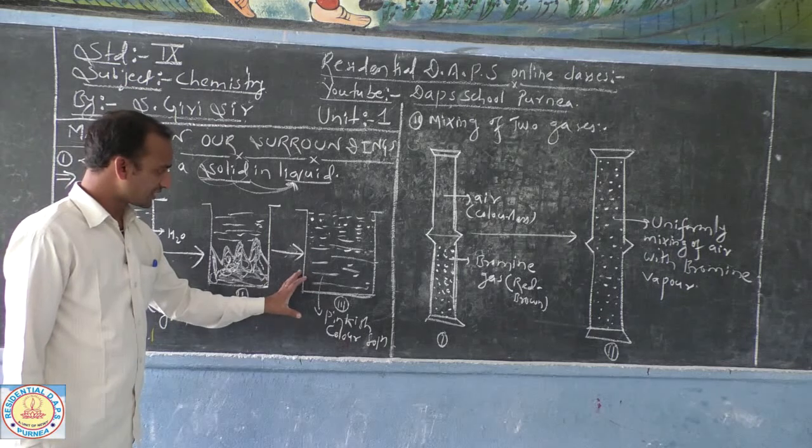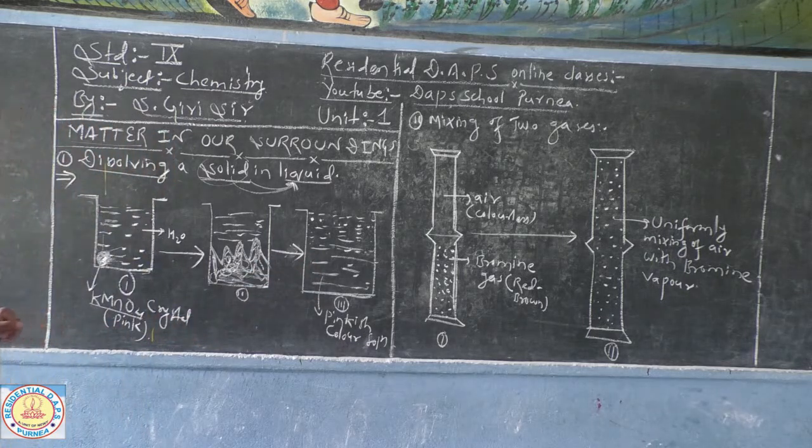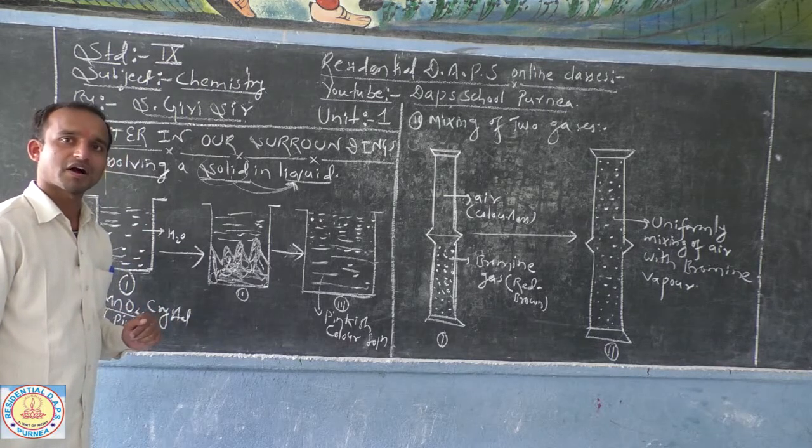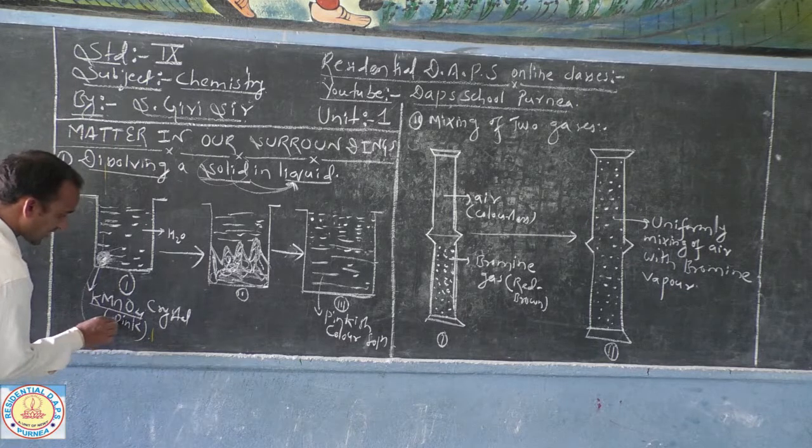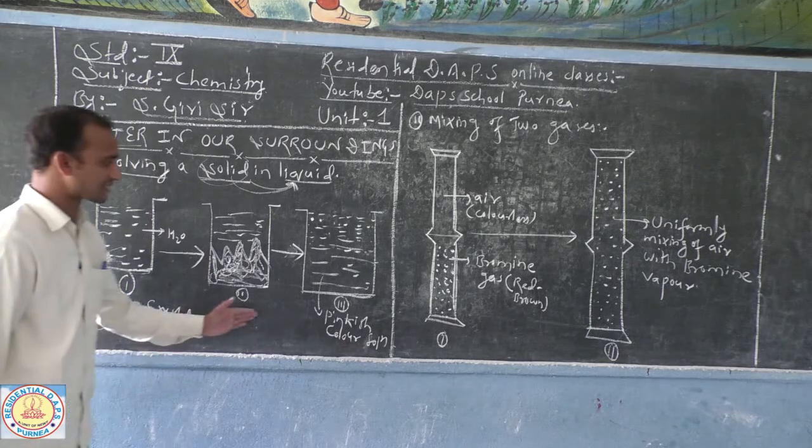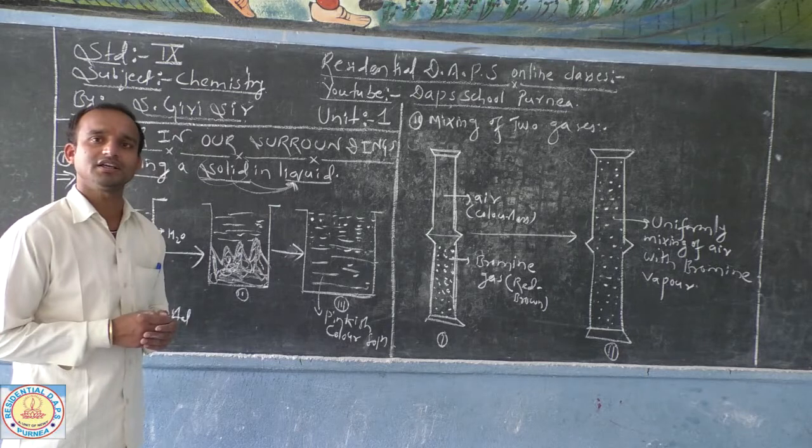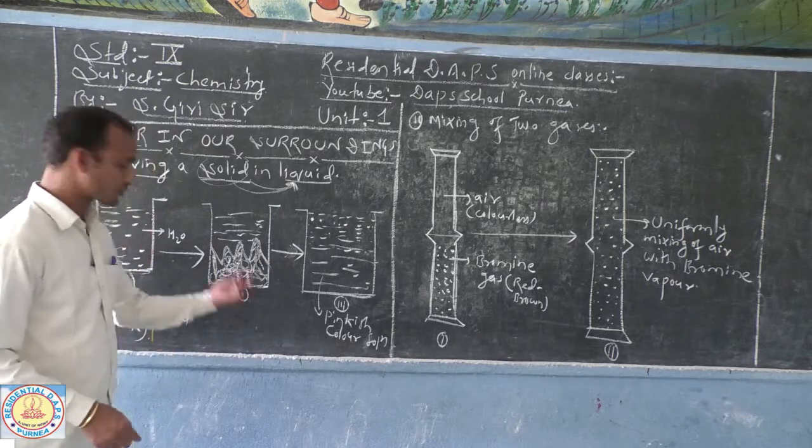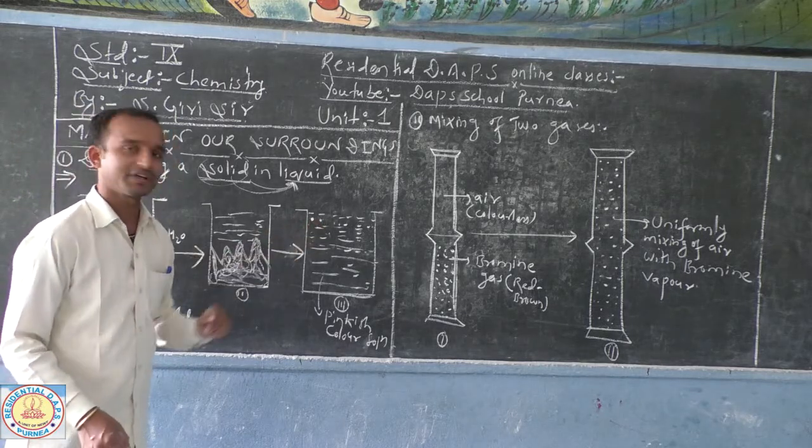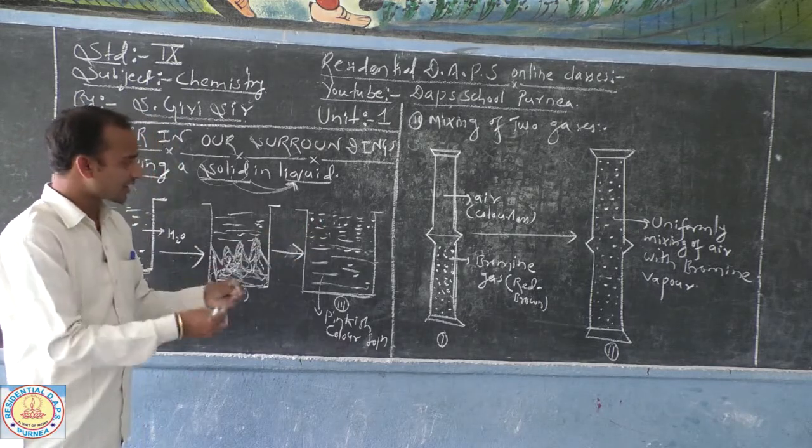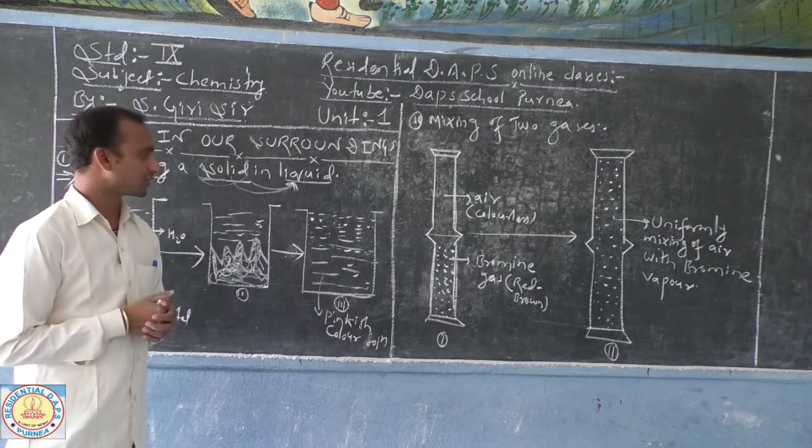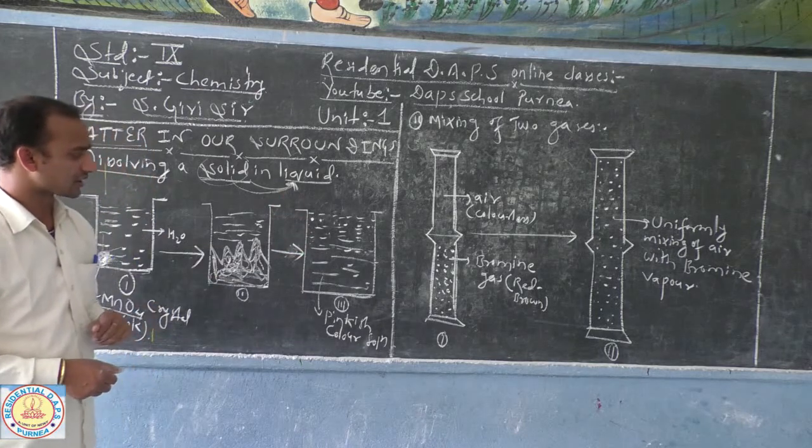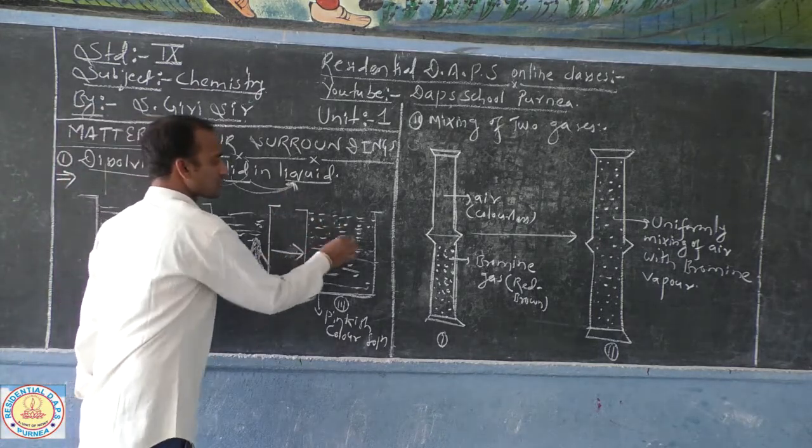This activity exactly proves that matter is made up of particles. Solid potassium permanganate crystals are made up of many tiny particles of potassium permanganate compound or substance. Each and every tiny particle started to scatter and dissolve along with the water molecules, and as a result you got the pinkish color solution.